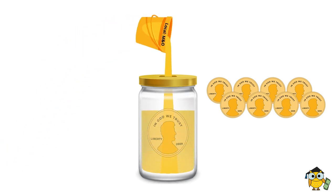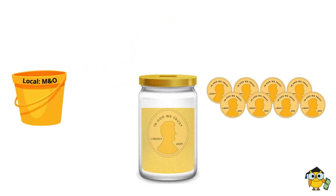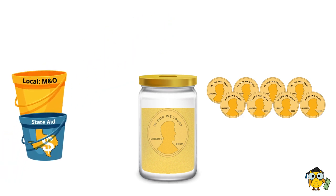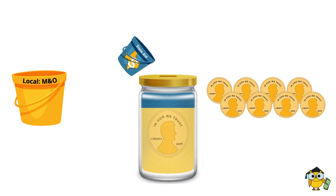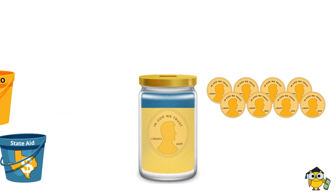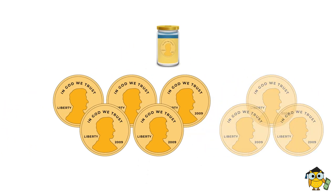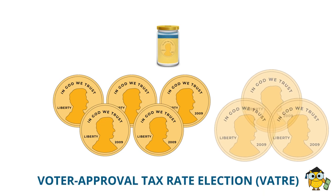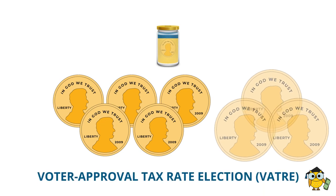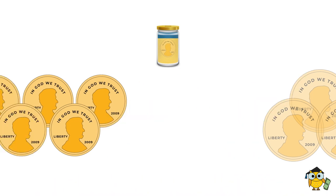If local M&O collections do not fill the jar all of the way, the state will pitch in to make the jar full. Leander ISD currently uses five golden pennies. To access the three other golden pennies, a voter approval tax rate election, or VATRE, would be required. More on the VATRE in a minute.